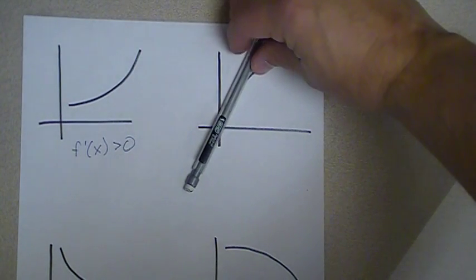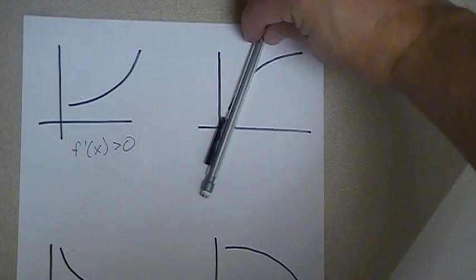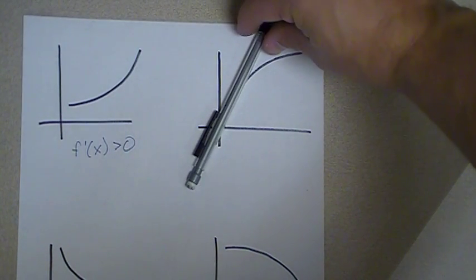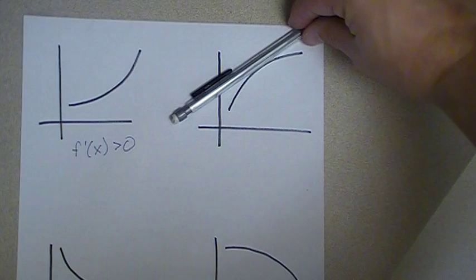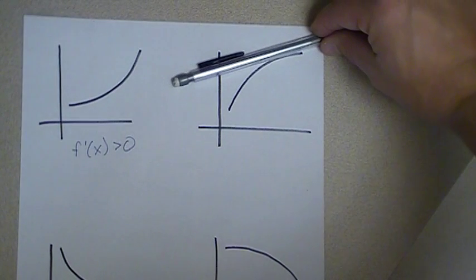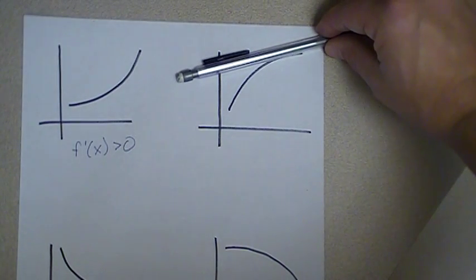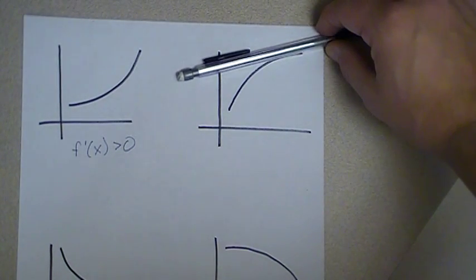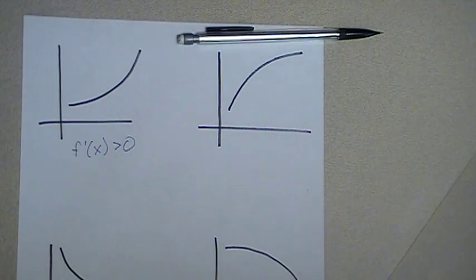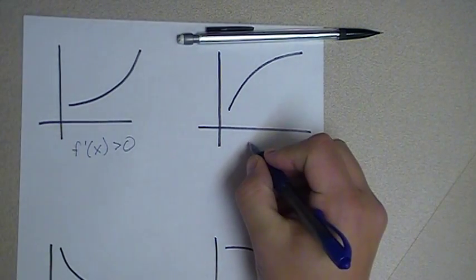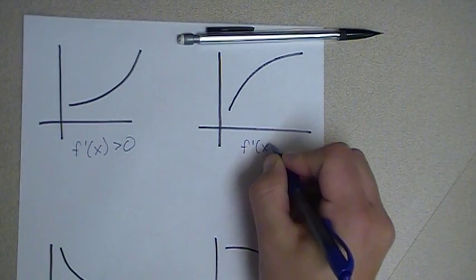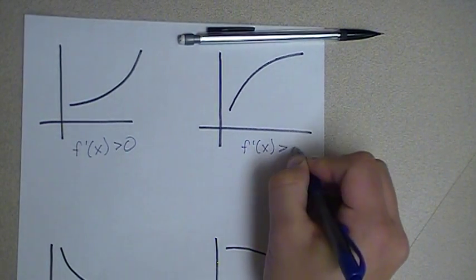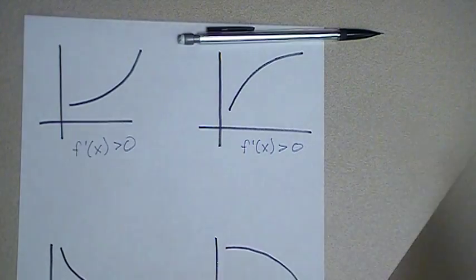Same thing can be said over here about this graph. You have a steep positive slope, then more level, more level, more level positive slope. But the slope is always positive. So you'd also be able to say that this graph is one whose first derivative is always positive.